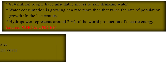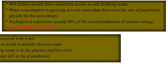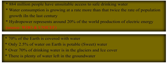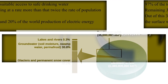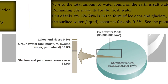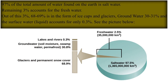70% of the earth is covered with water, but only 2.5% of water on earth is potable fresh water. Over 70% of drinking water is in the glaciers and ice cover. Of the total water on earth, 97% is salt water. The remaining 3% is fresh water, of which 68–69% is in ice caps and glaciers, 30–31% is groundwater, and surface liquid water accounts for only 0.3%.